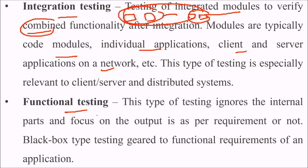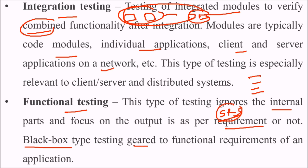Functional testing, as mentioned, is also black box testing. This type of testing ignores the internal part and focuses on the output as per requirement. The baseline document SRS is taken into account, and all the requirements contracted between the developer and the client are tested. This black box type testing verifies the functional requirements of an application.